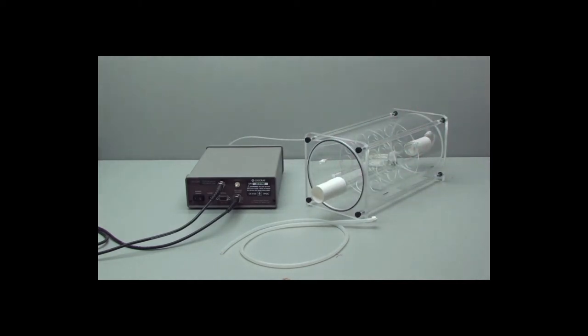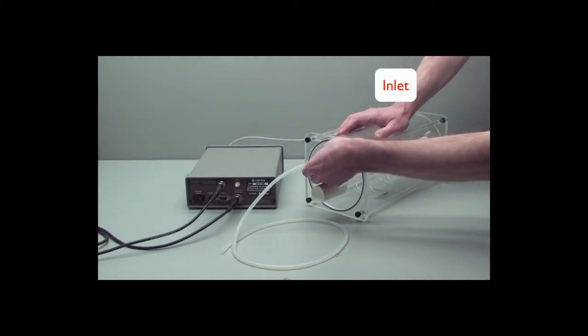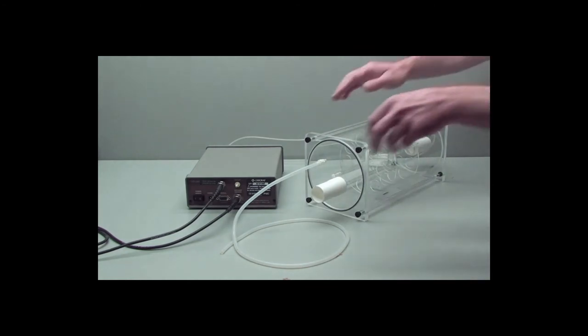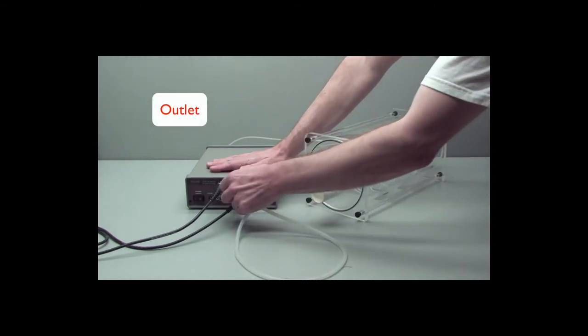Take the other tubing, and that goes to the inlet of the mixing chamber, and the other end goes to the outlet of the gas analyzer.